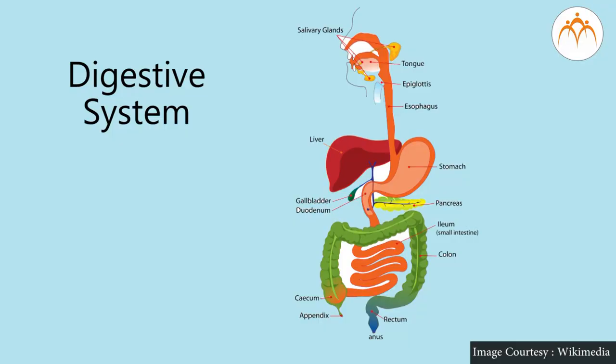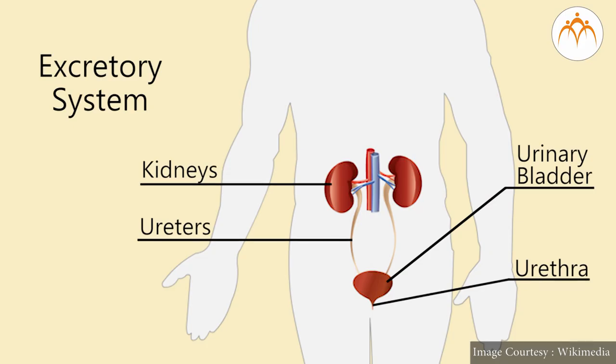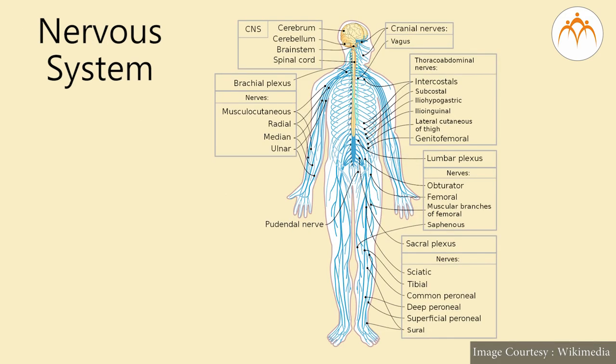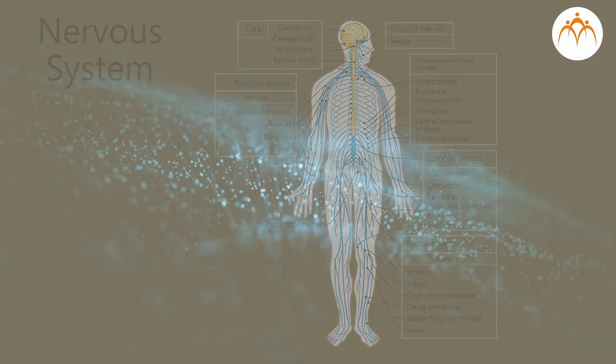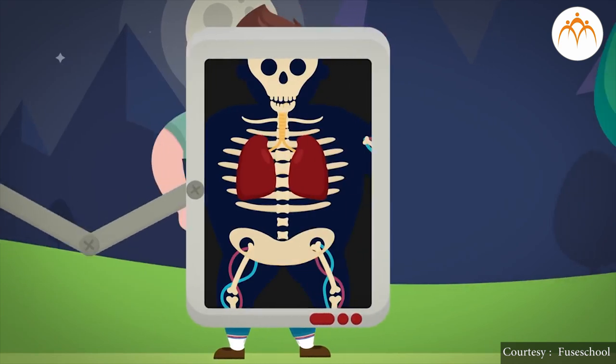In the human body there are various organ systems like digestive system, respiratory system, excretory system, circulatory system, nervous system etc. Today let's know more about the respiratory system.